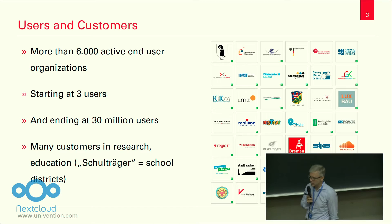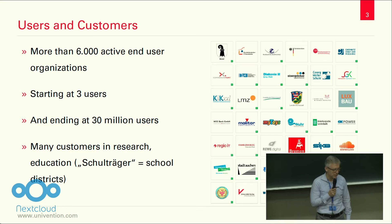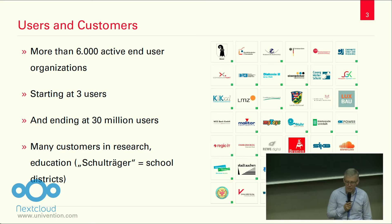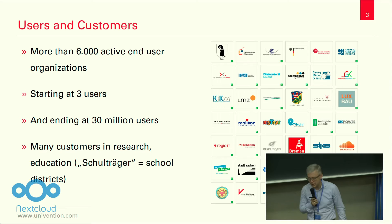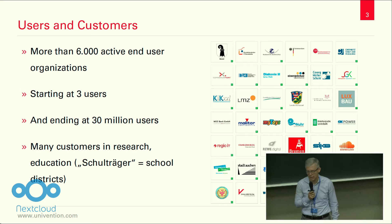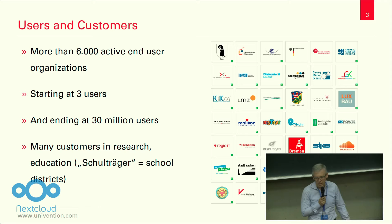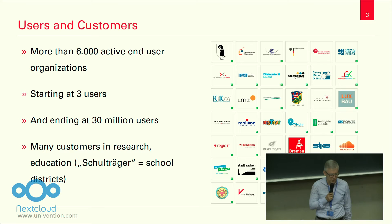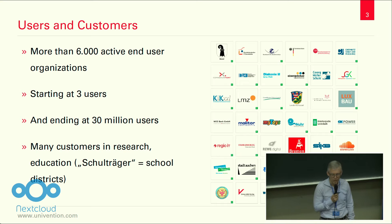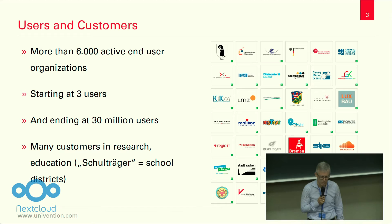We have a lot of customers in the public sector, and one customer group which is especially important to us is the school system. In fact, many of the larger German cities use Univention Corporate Server to provide their schools, their teachers, their students, and sometimes even the parents of the students with centrally managed access to learning management systems, to Wi-Fi in schools, to file services, to mail and groupware services, to computers in classrooms, and more and more, of course, to organize the integration of mobile devices into the school system, which is also really challenging.